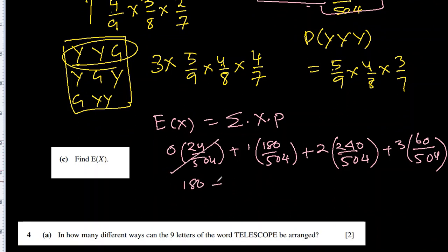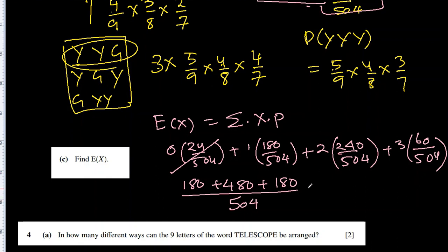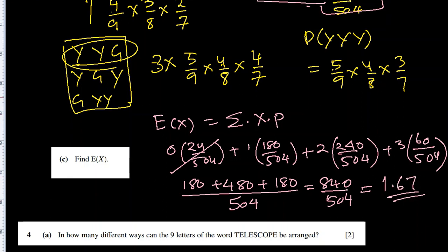Calculating: 0 + 180 + 480 + 180 = 840, divided by 504. Simplifying 840/504 gives approximately 1.67. That is the expected value.